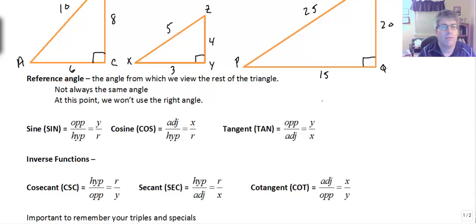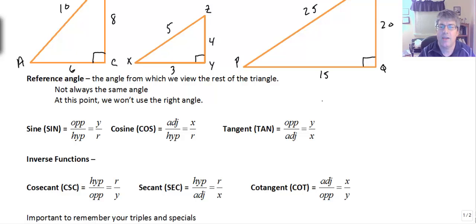The reciprocal of sine — sine is opposite over hypotenuse, or as we get deeper into trig, it's y over r, where r is the hypotenuse — is the cosecant, which is r over y. Cosine is adjacent over hypotenuse, and the reciprocal of cosine is the secant: hypotenuse divided by the adjacent side. Tangent is opposite over adjacent, and the reciprocal of tangent is the cotangent: adjacent over the opposite. It's easy to memorize that tangent and cotangent are reciprocals, but a little tougher with cosine and secant, and sine and cosecant — you might think cosine and cosecant would be reciprocals, but that's not the case, so some extra memorization is required.